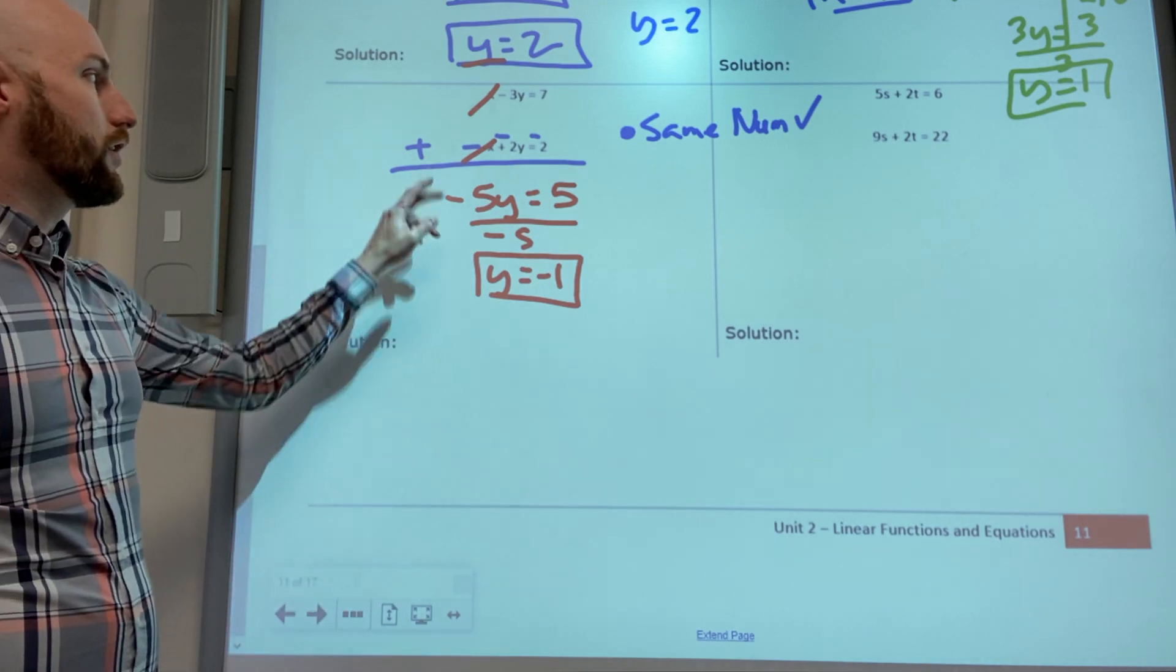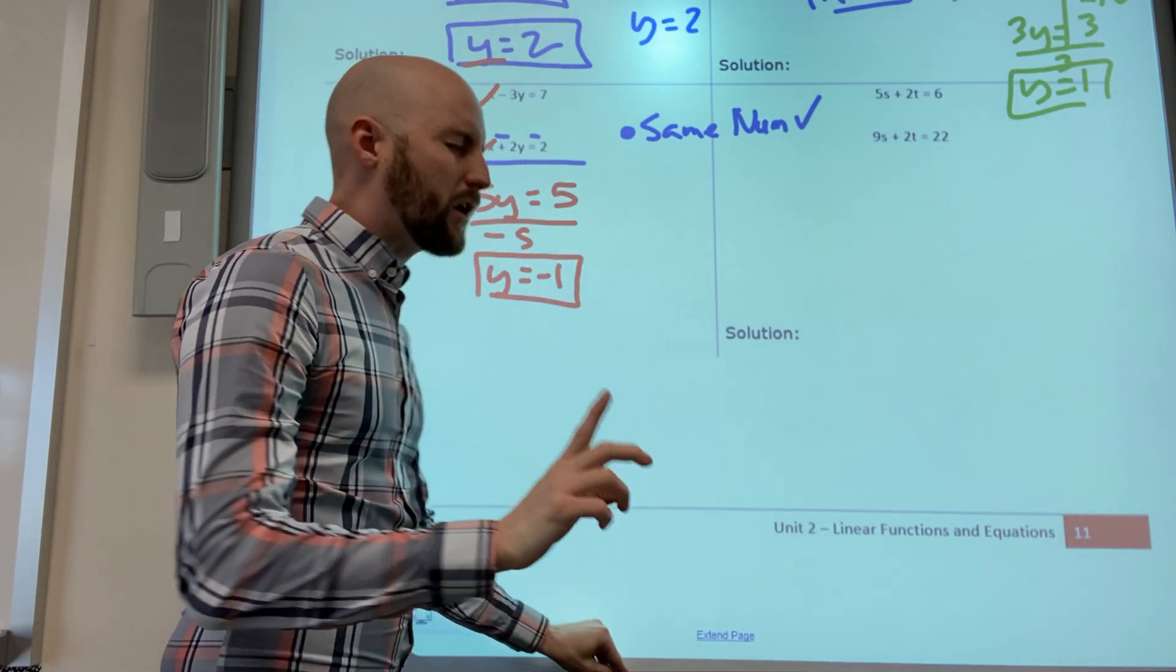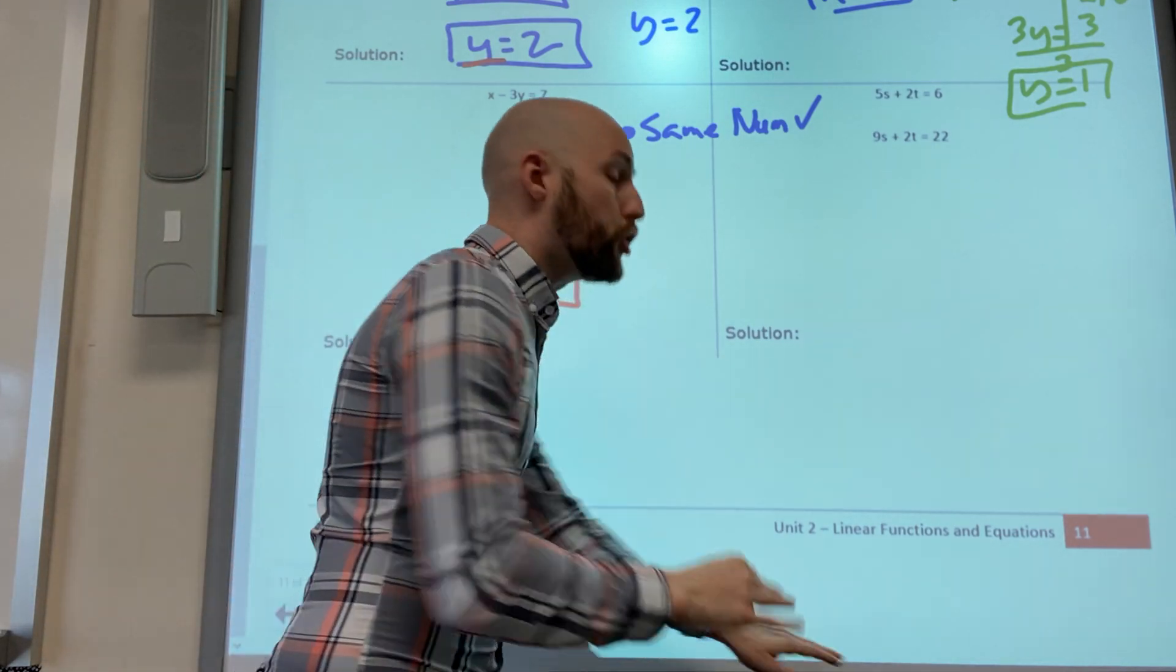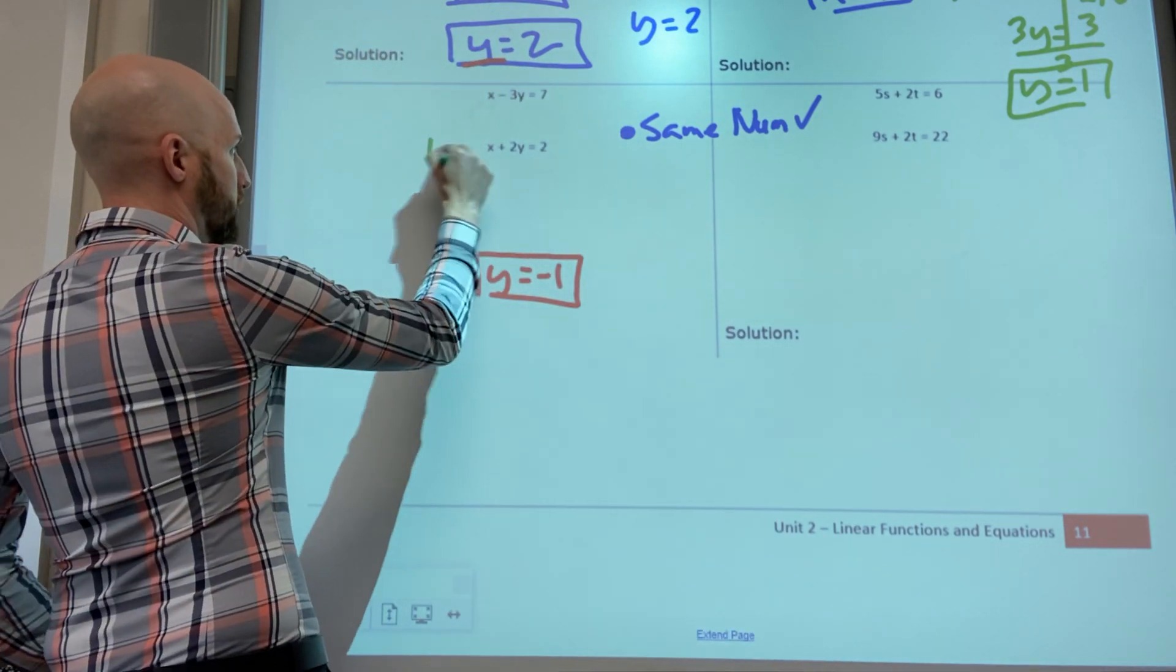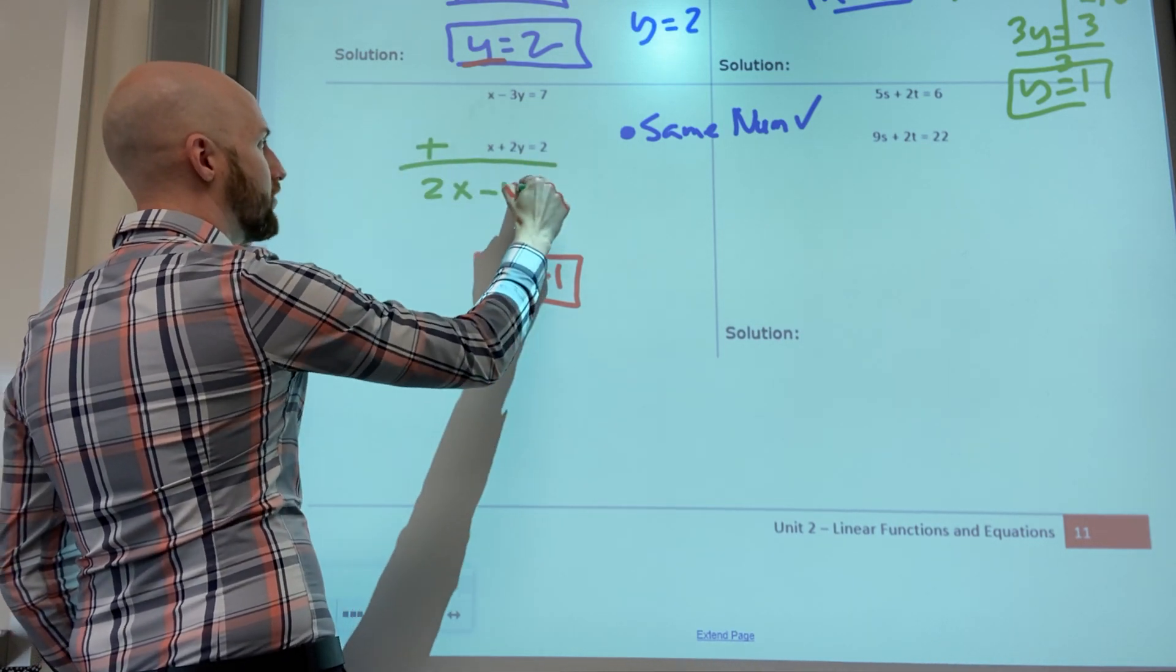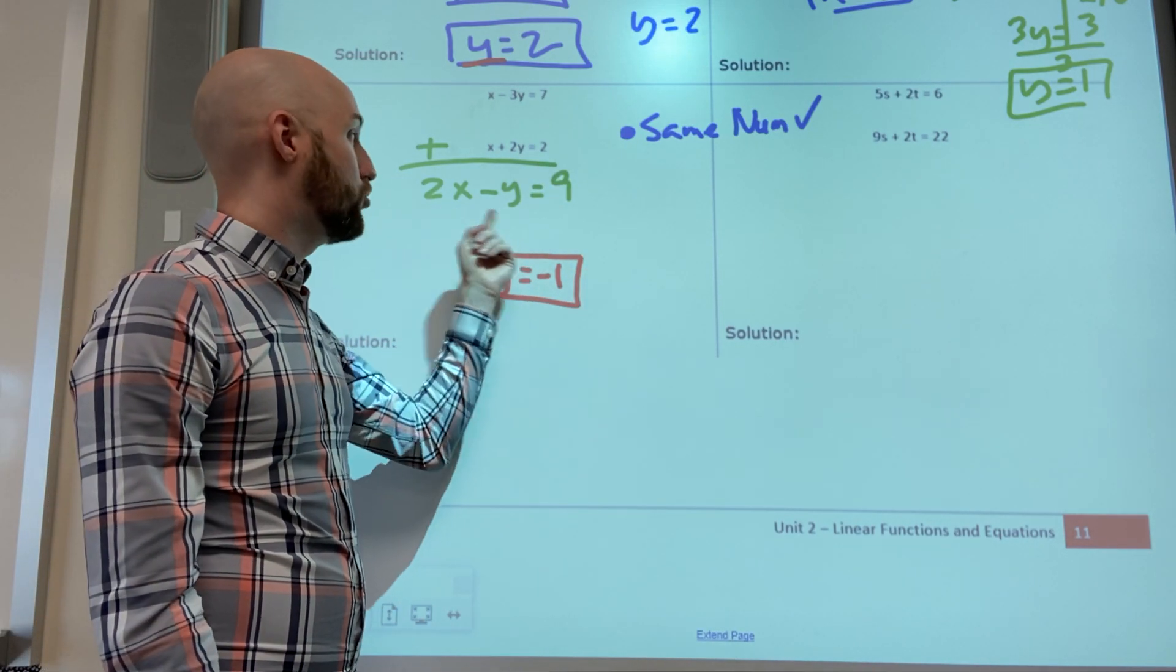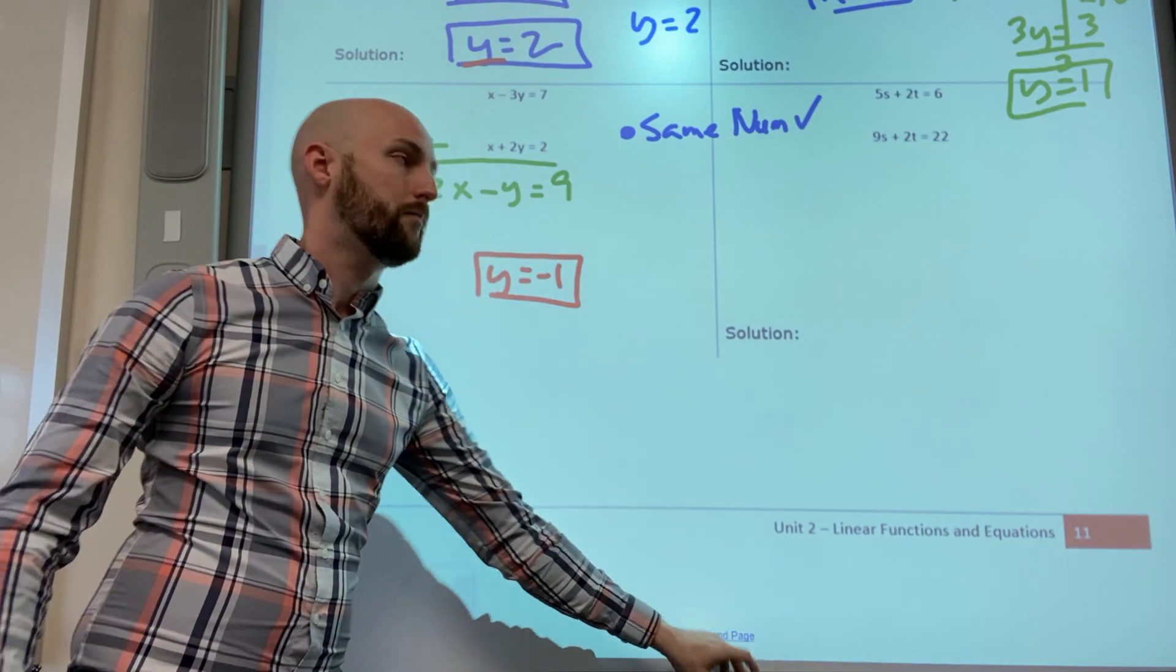Quiero ver algo rapidito. I want to show you something very fast. Si yo no cambio el signo, if I don't change the sign, x plus x is two x minus y equals nine. Doesn't help me because I have two letters. Por eso yo tengo que hacer el cambio del signo, that's why I have to change the signs.